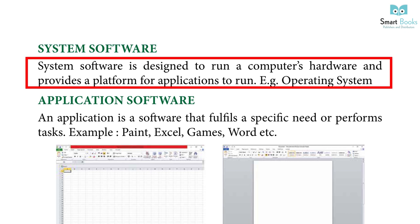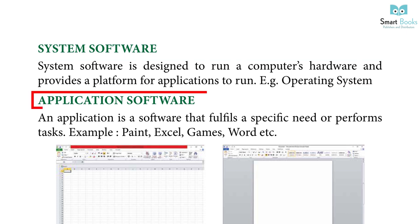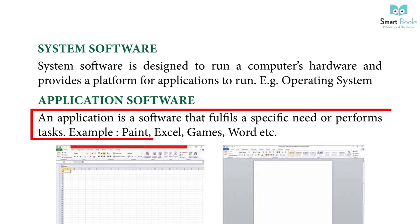System Software is designed to run a computer's hardware and provides a platform for applications to run. Example: Operating System. Application Software is software that fulfills a specific need or performs a task. Examples: Paint, Excel, Games, Word, etc.